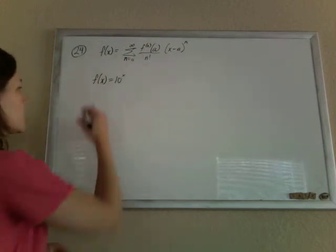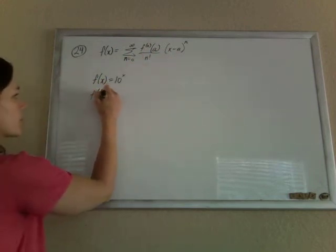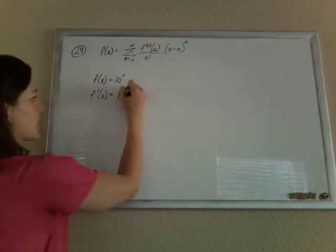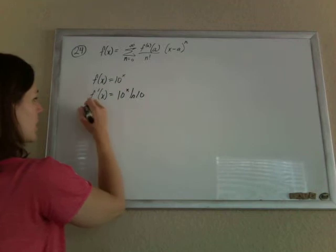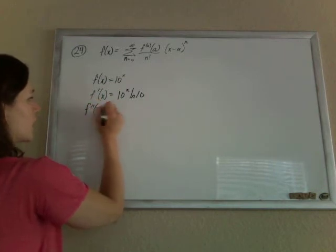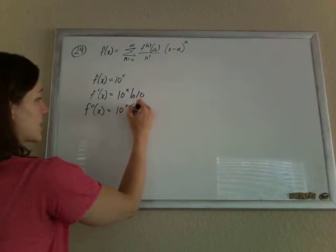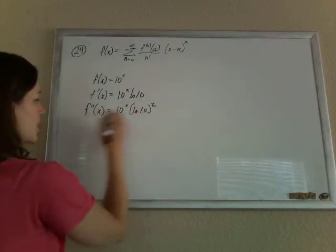So the first thing we're going to do is to try to find a formula for the nth derivative. So the derivative of that is 10 to the x times the ln of 10. Do it again. That'll be 10 to the x times another ln of 10. So we'll have ln of 10 squared.